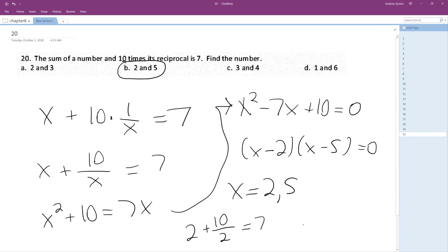So what about 5? 5 plus 10 over 5, which is 5 plus 2, which equals 7.